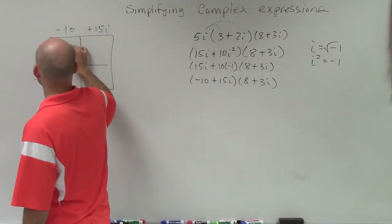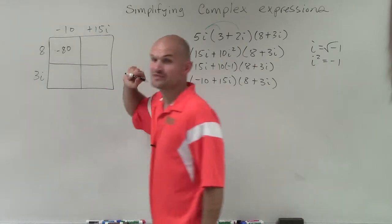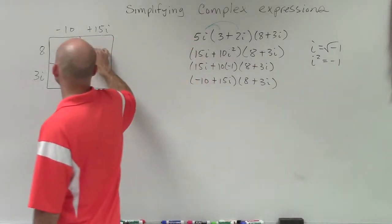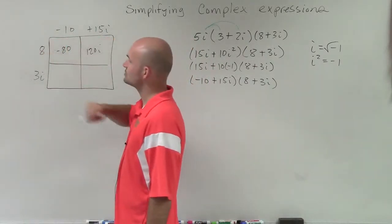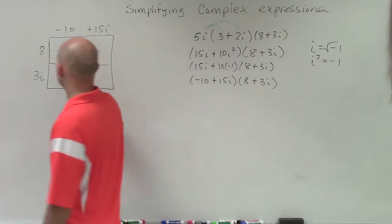8 times -10 is -80. 8 times 15i is 120i. -10 times 3i is -30i.